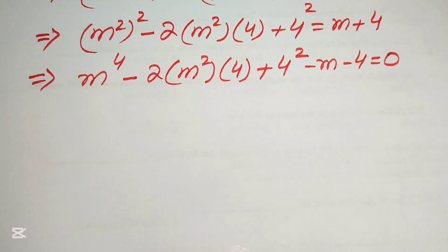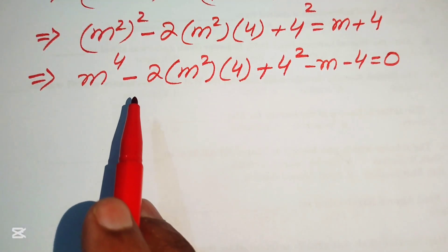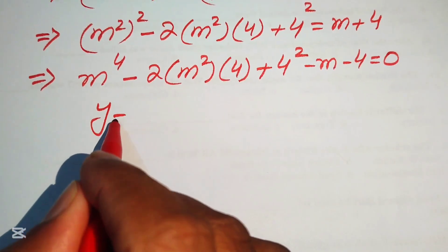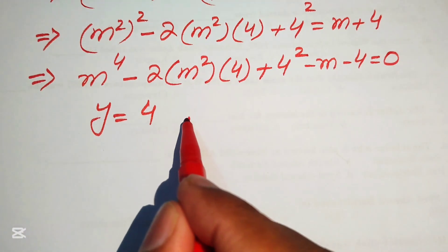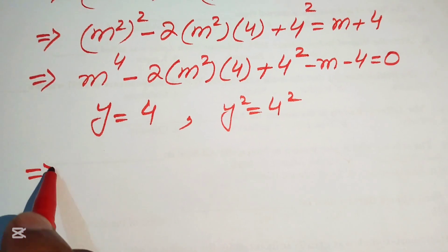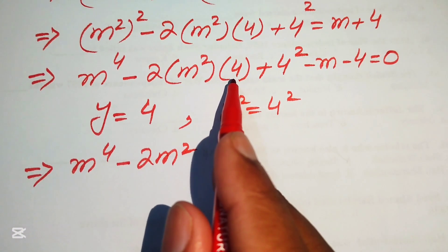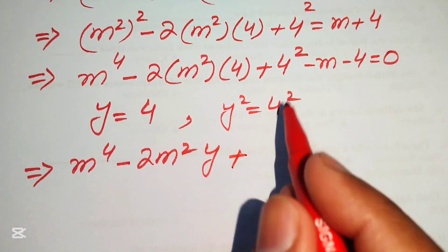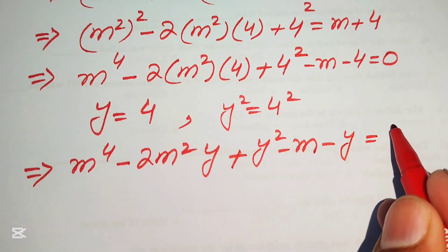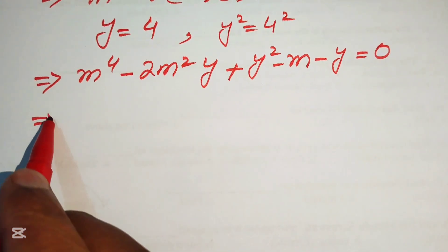This is the game-changer step. We have a fourth-order equation in m. We convert it into quadratic form by substituting y = m². Then y² = m⁴, and our equation is rewritten in terms of y, becoming a quadratic in y.